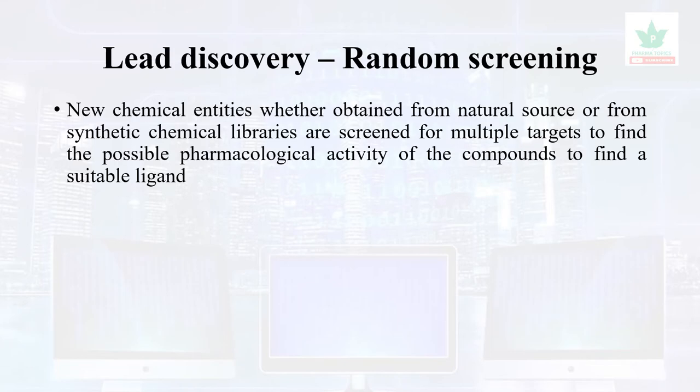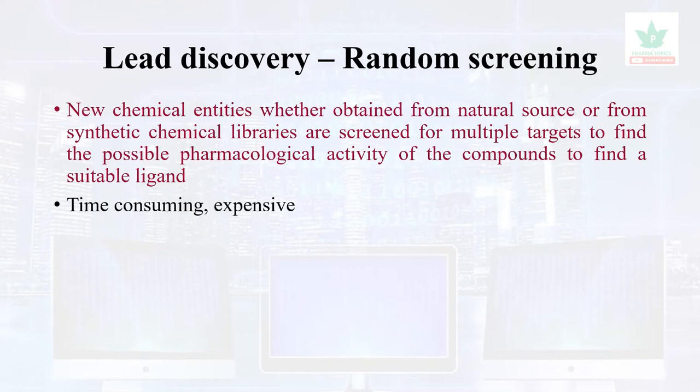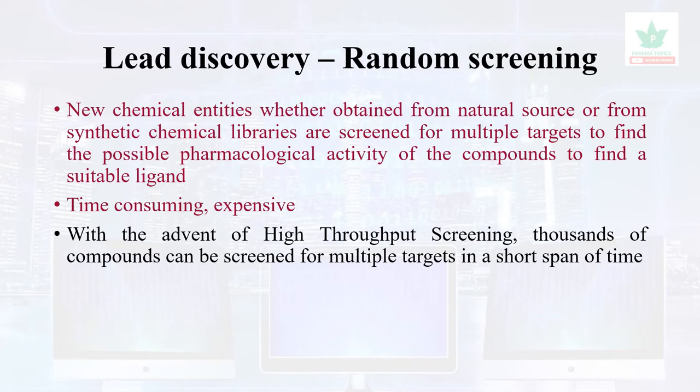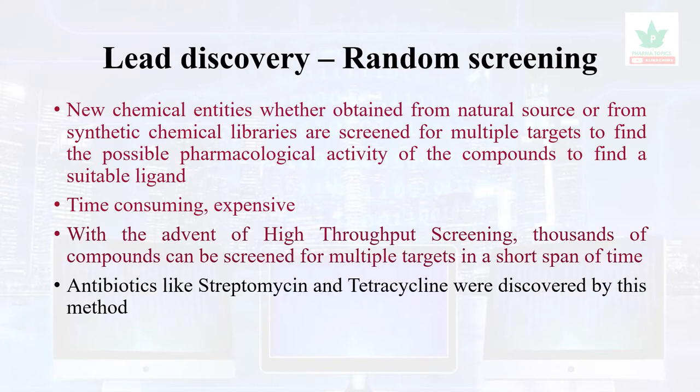Lead discoveries from random screening involve new chemical entities obtained from natural sources or synthetic libraries, screened for multiple targets to find possible pharmacological activities. This method is time-consuming and expensive; however, with the advent of high-throughput screening, thousands of compounds can be screened for multiple targets in a short span of time. Antibiotics like streptomycin and tetracycline were discovered by this method.